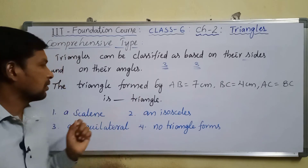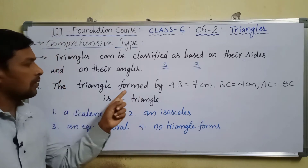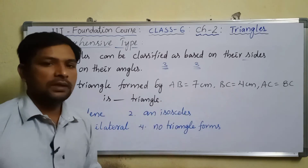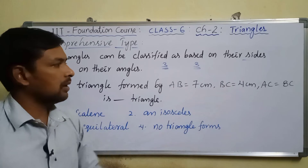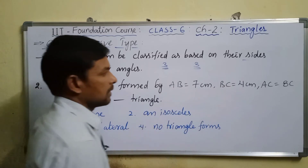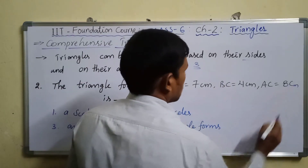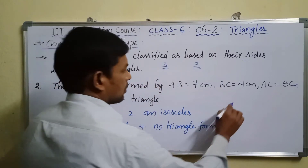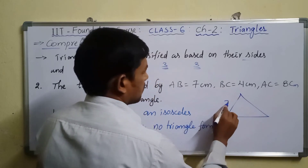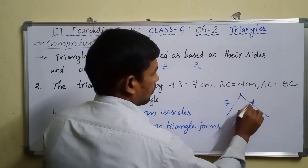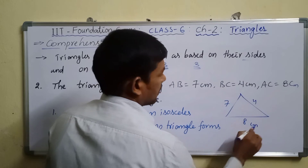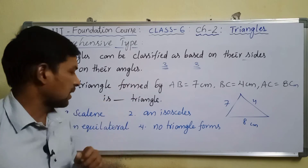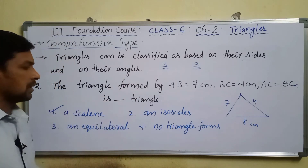Comprehensive type, second question: a triangle with AB = 7 cm, BC = 4 cm, and AC = 8 cm — what kind of triangle is it? All three sides are different: 7, 4, and 8 cm. A triangle with three different sides is a scalene triangle. So option one is the correct answer.